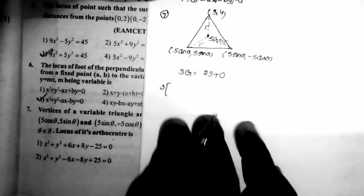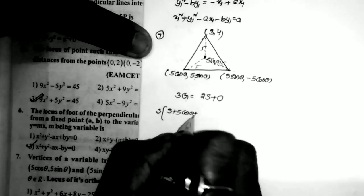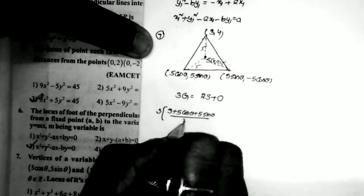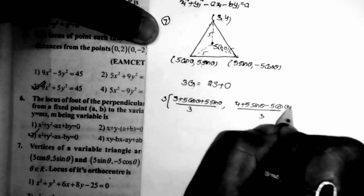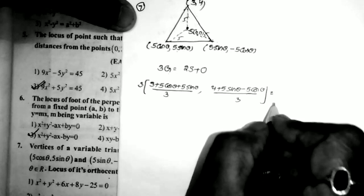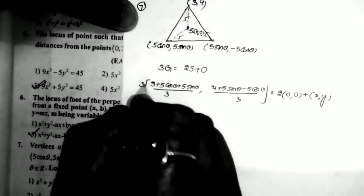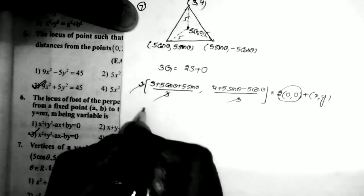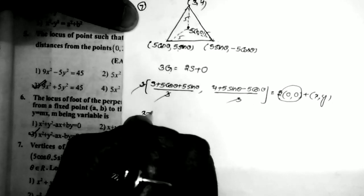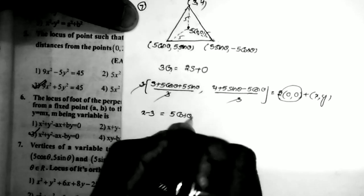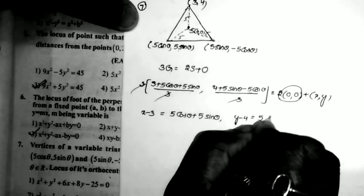The centroid G = ((3 + 5cosθ + 5sinθ)/3, (4 + 5sinθ - 5cosθ)/3). Using 3G = 2S + O with S = (0,0) and O = (x, y): x = 3 + 5cosθ + 5sinθ and y = 4 + 5sinθ - 5cosθ. So x - 3 = 5cosθ + 5sinθ and y - 4 = 5sinθ - 5cosθ.